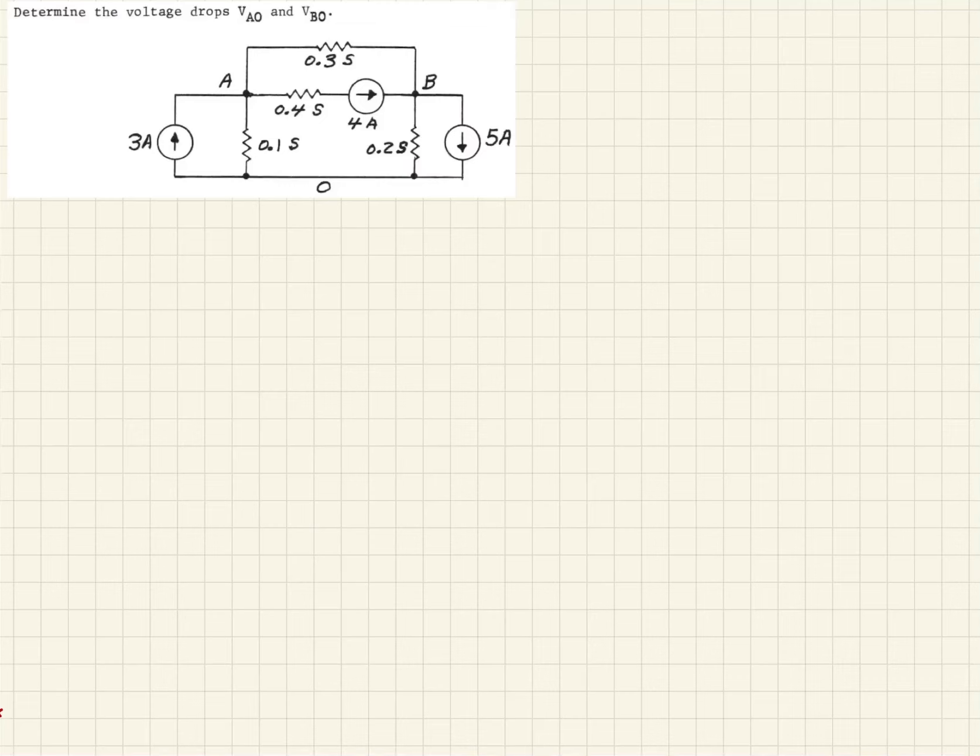In this example, we're given a simple circuit here with three different current sources driving the circuit. They're asking us to determine the voltage drop VA0 and VB0.